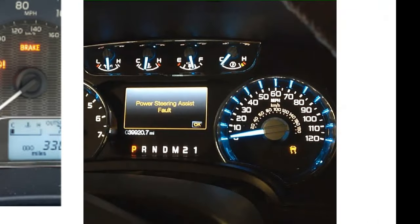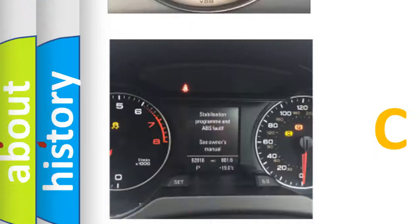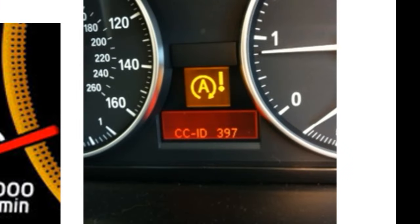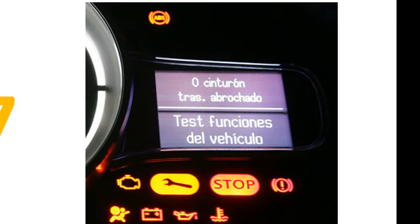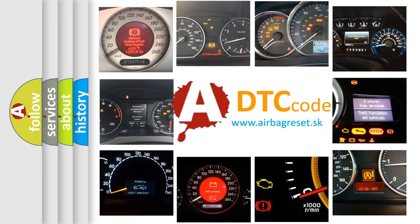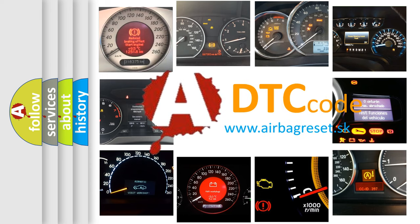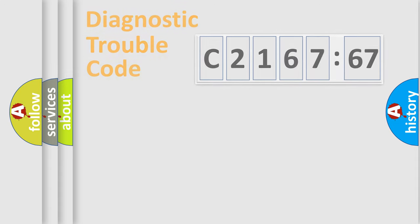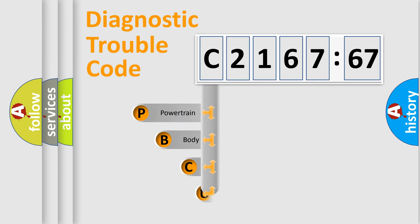Welcome to this video. Are you interested in why your vehicle diagnosis displays C2167:67? How is the error code interpreted by the vehicle? What does C2167:67 mean, or how to correct this fault? Today we will find answers to these questions together. Let's do this.